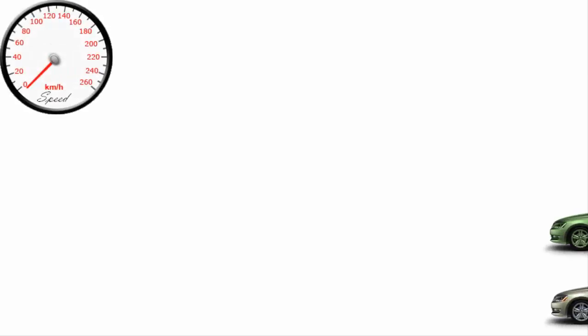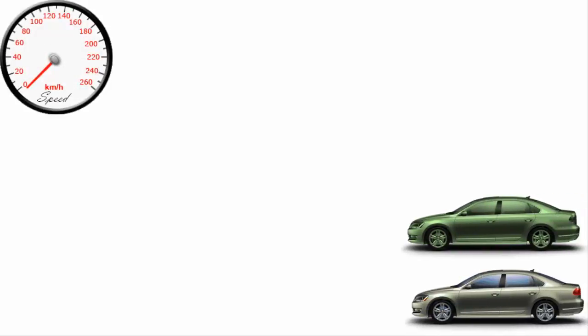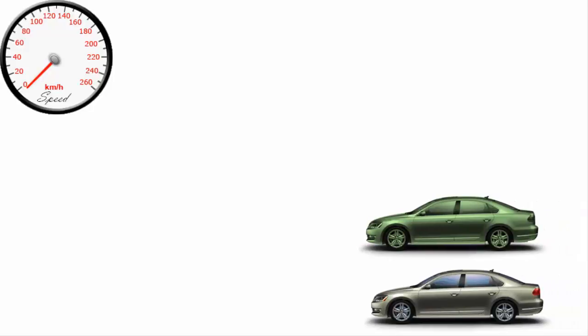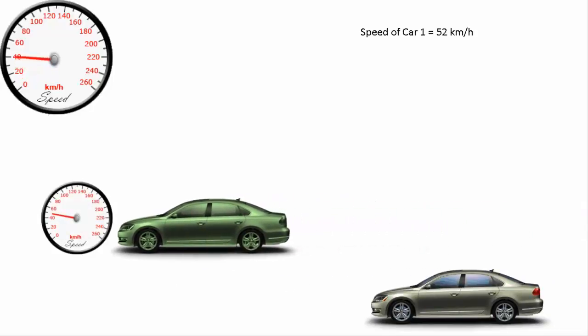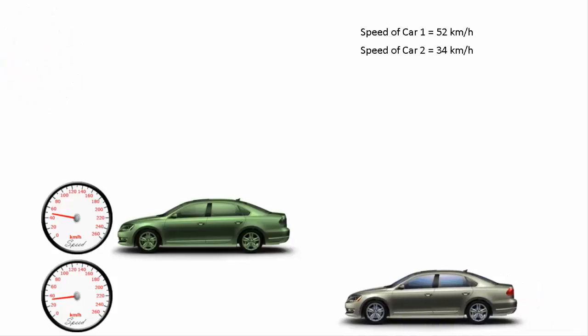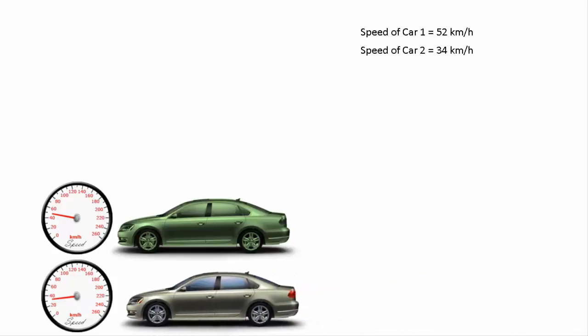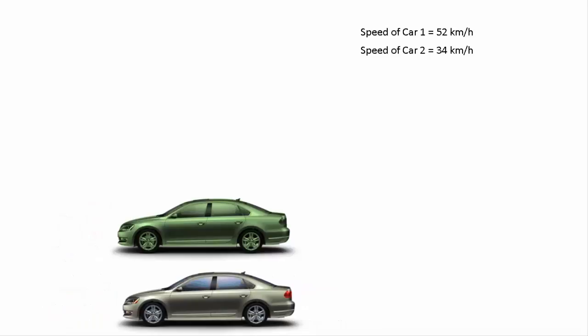Here you have been given information about two cars. Speed of car 1 is 52 km per hour and speed of car 2 is 34 km per hour. Now when you're reading, you come to know they apply the brake, that means the car was already in motion.